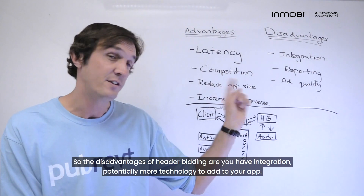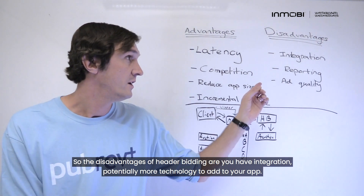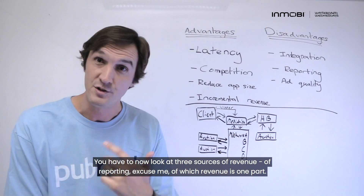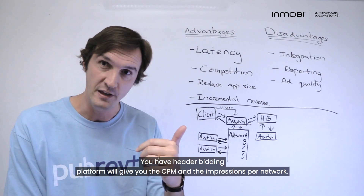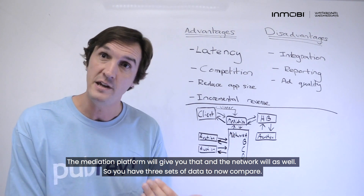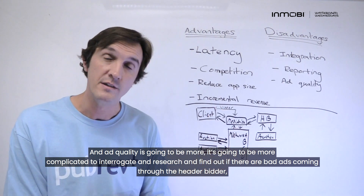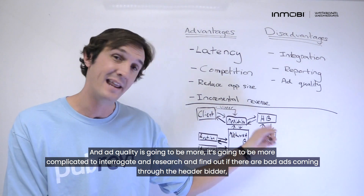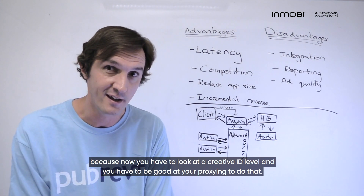The disadvantages of header bidding are: you have integration — potentially more technology to add to your app. You now have to look at three sources of reporting, of which revenue is one part. The header bidding platform will give you the CPM and impressions per network, the mediation platform will give you that, and the network will as well — so you have three sets of data to compare. Ad quality is also going to be more complicated to interrogate and research, to find out if there are bad ads coming through the header bidder, because you have to look at a creative ID level and you have to be good at your Charles proxying to do that.